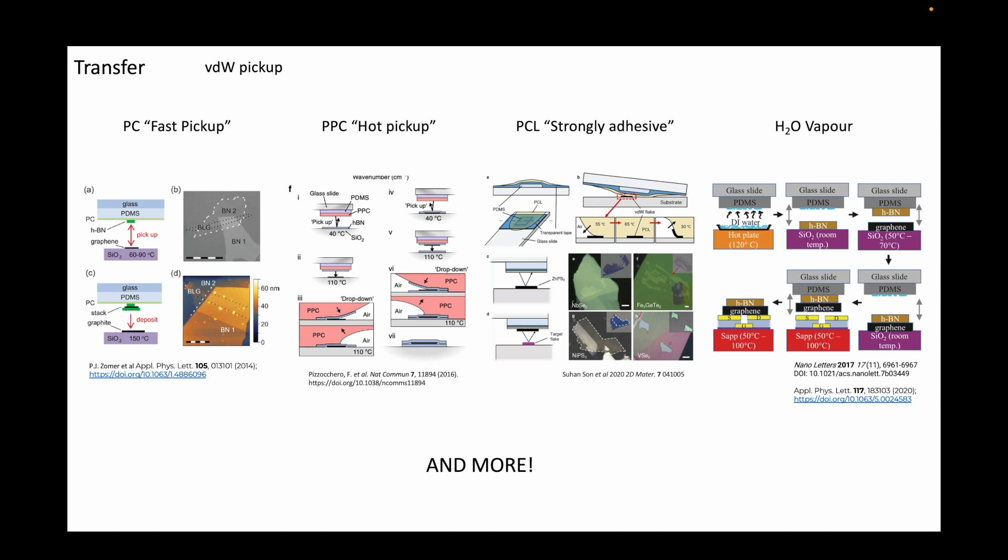Then the polymer is slowly retracted, taking along with it the flake. The subsequent layers are easier to pick up because typically the van der Waals interaction between the 2D layers is stronger than between a 2D flake and silicon dioxide.